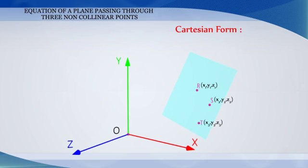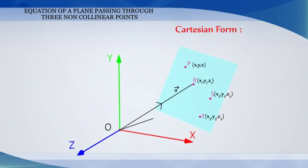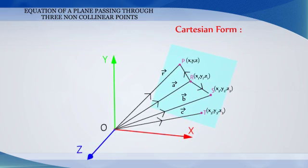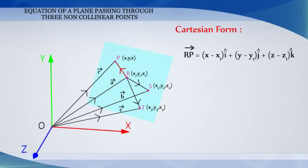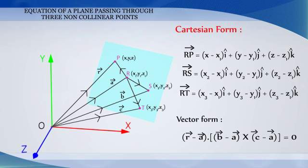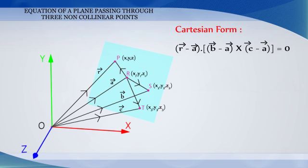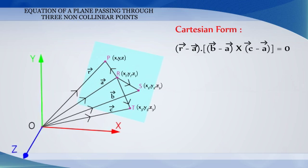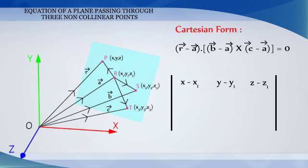And also, let X, Y, Z be the coordinates of the point P on the plane with position vector R. Now, vector RP is equal to (X minus X1) i-cap plus (Y minus Y1) j-cap plus (Z minus Z1) k-cap. Similarly, we can get the values of vectors RS and RT. Substituting these values in the vector form of the equation of the plane and expressing it in determinant form, we get the equation of the plane passing through three non-collinear points as the determinant of: [X minus X1, Y minus Y1, Z minus Z1; X2 minus X1, Y2 minus Y1, Z2 minus Z1; X3 minus X1, Y3 minus Y1, Z3 minus Z1] is equal to zero.